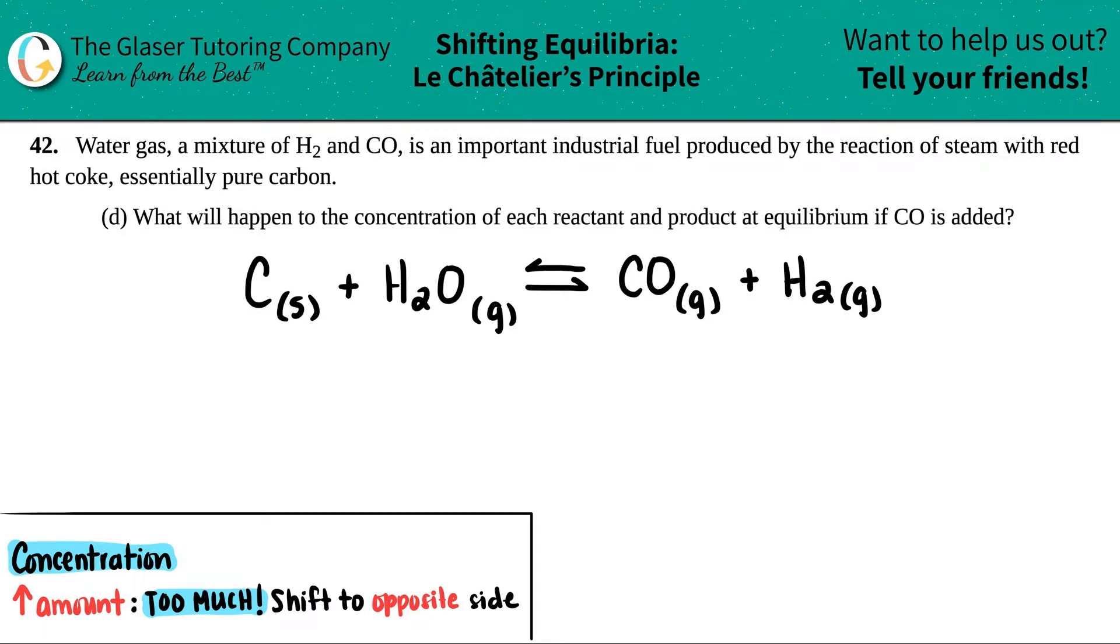Number 42: Water gas, a mixture of H2 and CO, is an important industrial fuel produced by the reaction of steam with red hot coke, essentially pure carbon. Letter D asks: What will happen to the concentration of each reactant and product at equilibrium if CO is added?